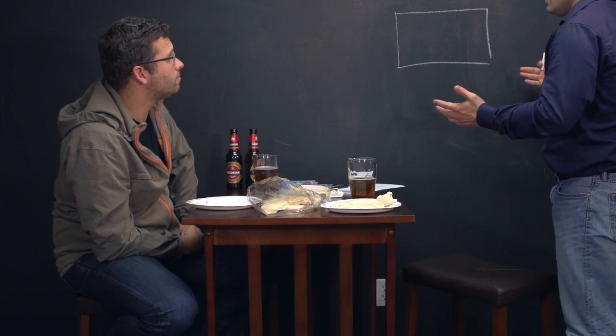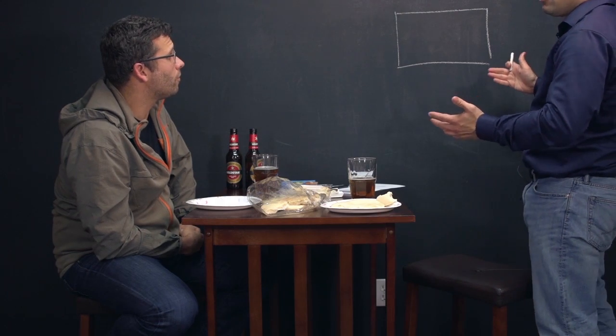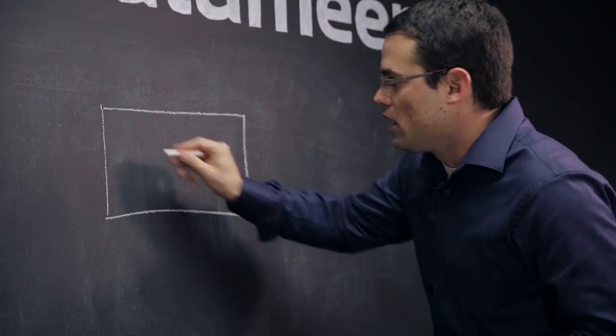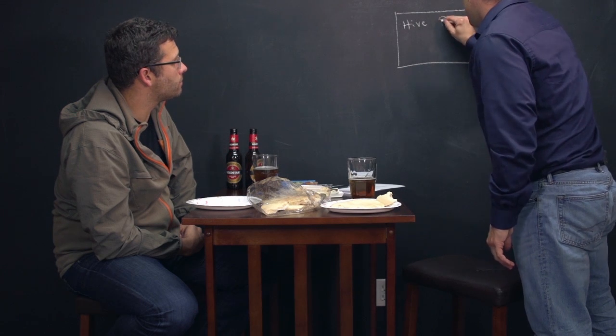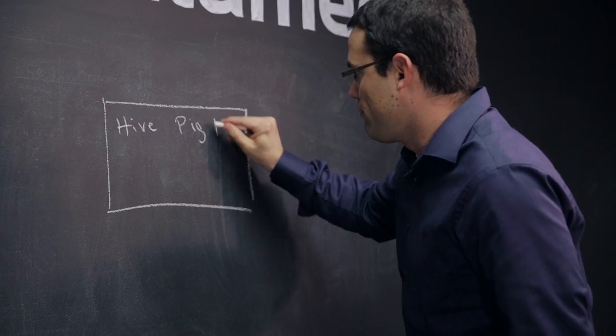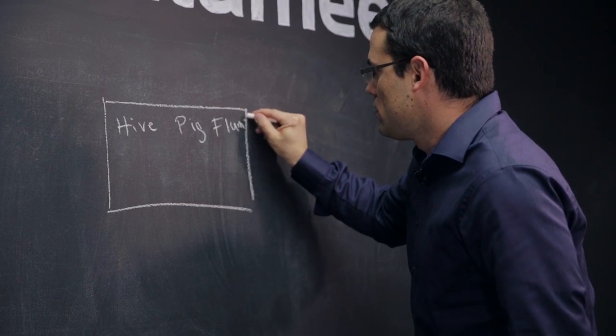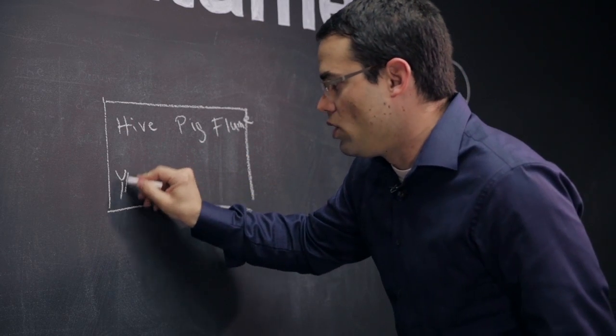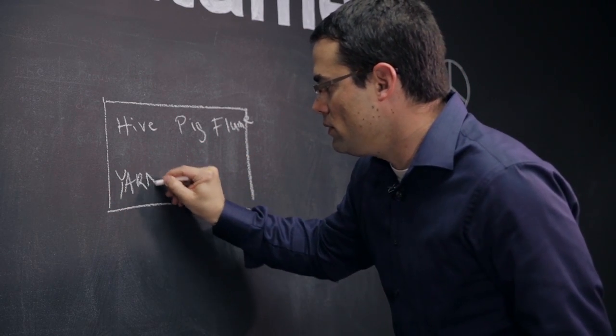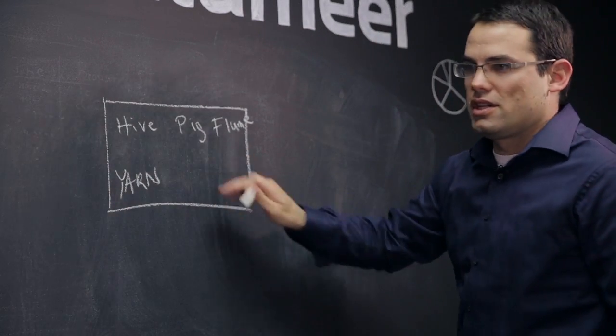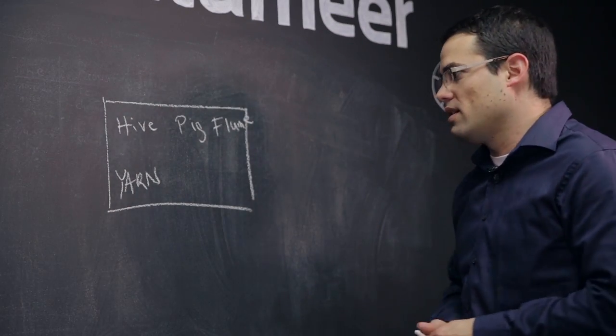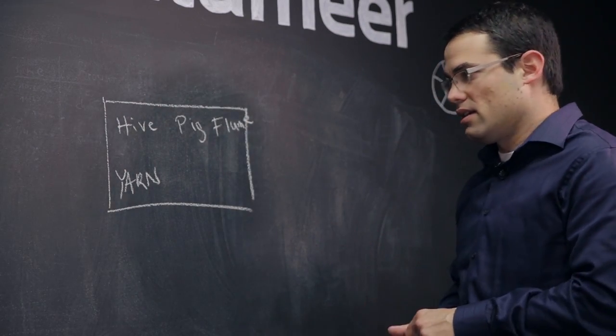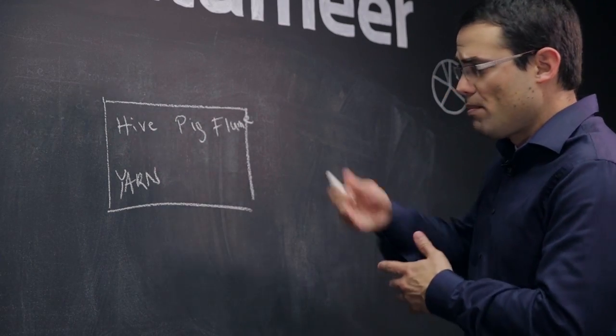It all starts with a collection of over 12 different, maybe 15 even now, open source Apache community projects. So we have things like Hive here, Pig, Flume, we just announced Yarn. So many different projects here and these are just a few of them. There's Zookeeper and Scoop and Stinger, Tez coming into play. You can run Impala on the platform, that's part of it as well.